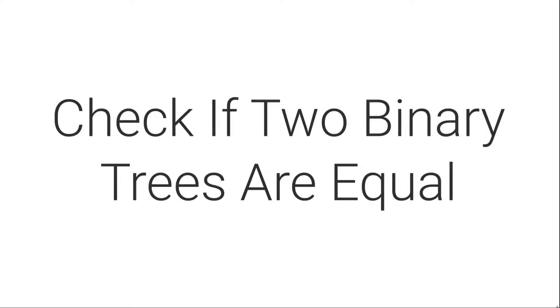Let's see how to check if two binary trees are equal. First of all, what does it mean to say that two binary trees are equal? An intuitive way to put it would be to say that two binary trees are equal when they have the same values and they are arranged in the same way.